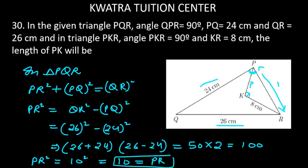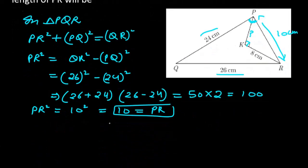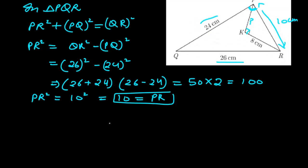So this is 10 cm. Now you can find the length of PK, because we now have two parts, and the third part can be found using Pythagoras theorem.